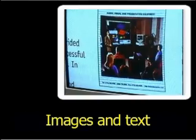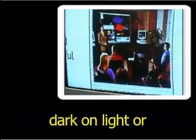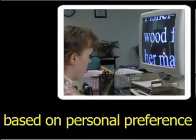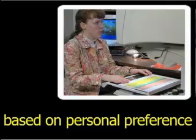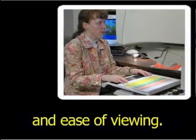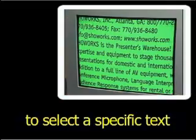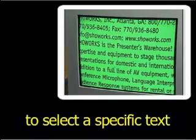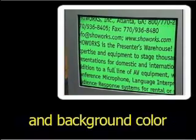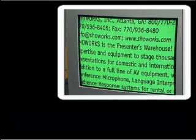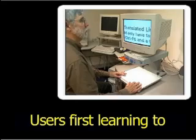Images and text can be viewed as dark on light or reversed based on personal preference and ease of viewing. Some models allow the user to select a specific text and background color, as demonstrated in this scene: black text on a light green background.